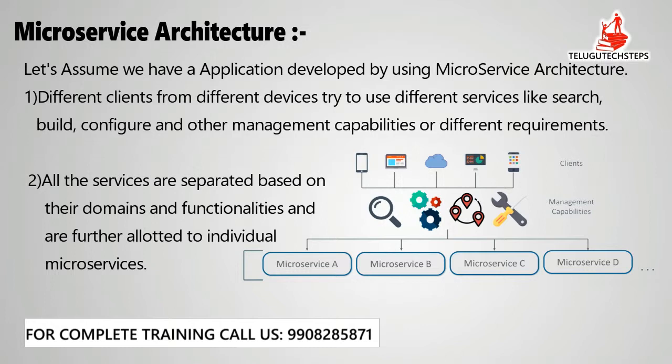Each service is allocated to individual microservices. The functionality is split into different parts separated by domain. Each microservice — Microservice A, Microservice B, Microservice C, Microservice D — is defined based on client requirements. Based on the service needed, you can use any combination of microservices, and you can have any number of microservices.